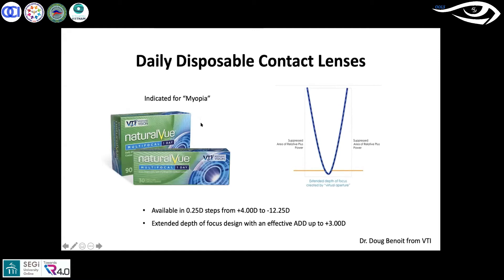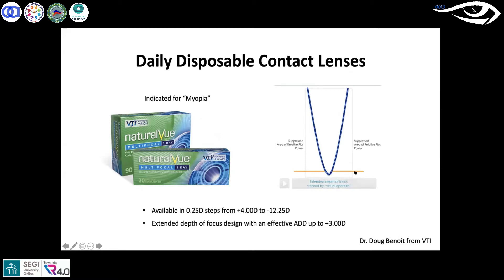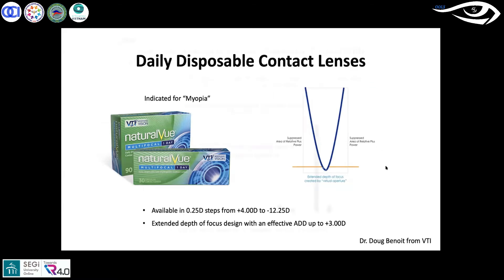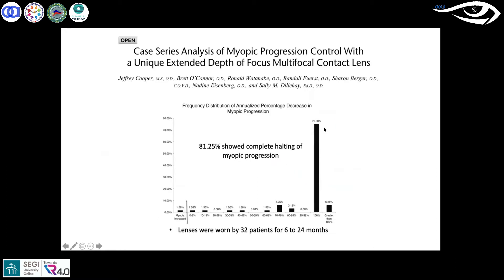I've been using the NatraView lens for about five years. It's not specifically indicated for slowing eye growth, but it has a wide range — up to minus 12.25 — so it works even for higher myopes. It has an extended depth-of-focus design with roughly a plus-3 add in the periphery. A study by Cooper, though not a randomized trial, found that 81.25% of patients had complete halting of eye growth. We need better randomized studies to fully vet this, but I feel comfortable offering it in my clinic.